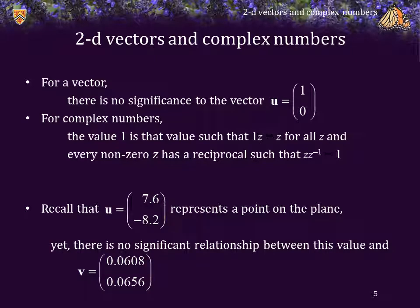Recall that the vector u, 7.6, negative 8.2, does represent a point in the plane. Yet, there's no real significance between this point and the point v, which equals 0.0608 and 0.0656. However, you may note that the product of the two corresponding complex numbers is indeed equal to exactly 1.